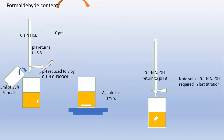Note the volume of NaOH required in the last titration. The formaldehyde content equals the corrected volume of 0.1 normal NaOH spent, multiplied by 10 ml per kg minus 1. Just put that value into this formula and you will get the aldehyde content — how much aldehyde content is present in your sample. Friends, if you are new to this channel, please give a like to my video and subscribe. Thank you.